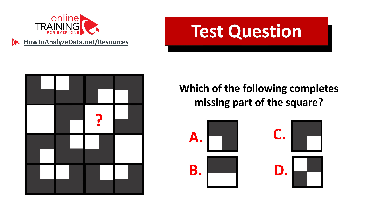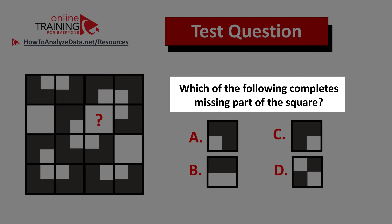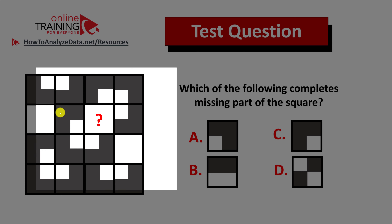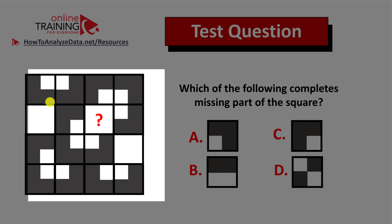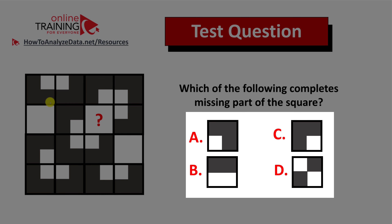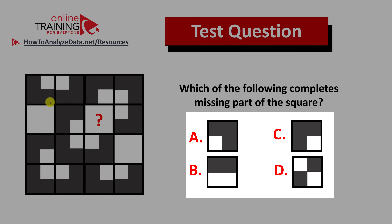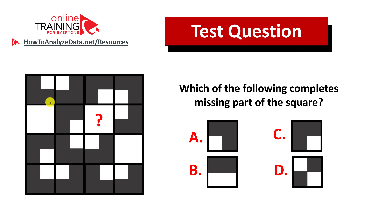Let me share a tricky question which tests your pattern recognition and visual reasoning skills. Which of the following completes the missing parts of the square? You're presented with a 4x4 square which contains different smaller squares inside, and four possible choices: Choice A, B, C, and D. Now might be a good time to pause this video and give yourself 10 to 20 seconds to see if you can come up with the answer.